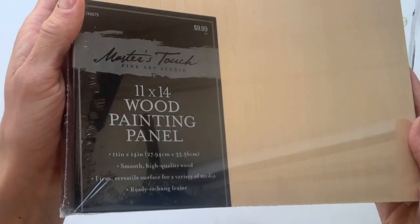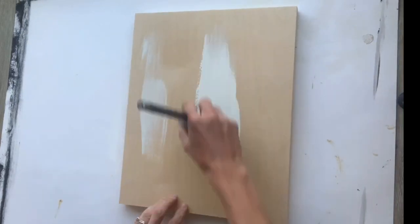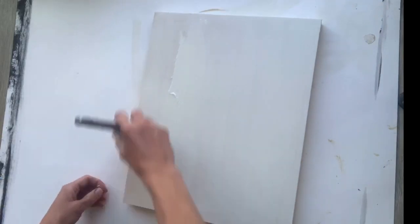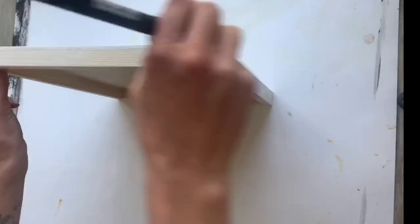I started with this 11 by 14 wood painting panel and some Antique Villa from Wise Owl Paint. I covered the entire panel and gave it about two coats until it was fully covered.